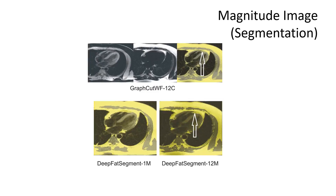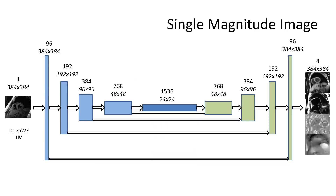Fat segmentation using a single magnitude image provided good fat segmentation of large fat structures. Using 12 magnitude images, it provided improved segmentation including smaller fat structures. The Dice-Sørensen index improved from 0.76 using a single magnitude image to 0.9 using 12 magnitude images.